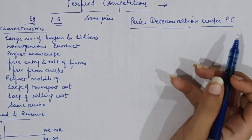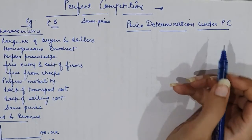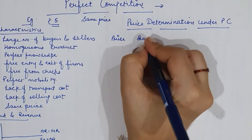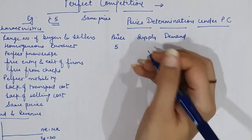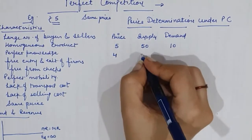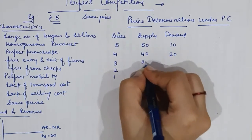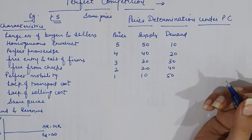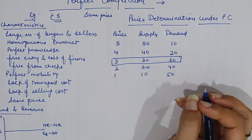Price determination under perfect competition: the equilibrium price is determined at the point where aggregate demand equals aggregate supply. To clarify with a table having three columns — price, supply, and demand — suppose price is 5 rupees; the supplier is ready to supply 50 units but demand is only 10 units. If price falls to 4, supply reduces to 40 but demand extends to 20. As per the laws of demand and supply, equilibrium is established where demand and supply match, which is at price 3.